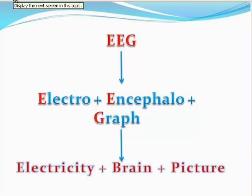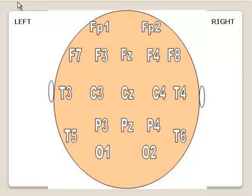EEG stands for electroencephalogram, which records the summation of excitatory and inhibitory post-synaptic potentials. EEG is recorded by placing a set of electrodes on the scalp.